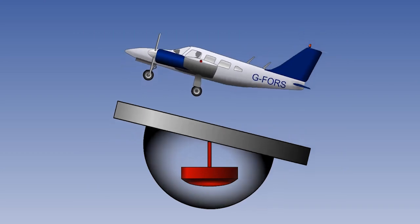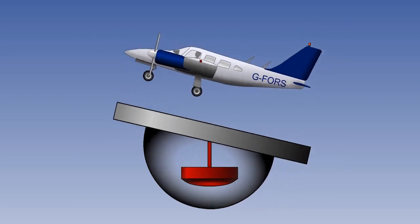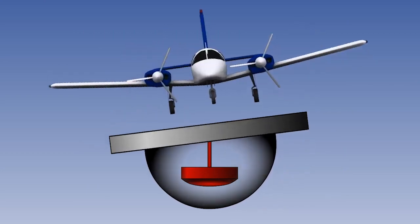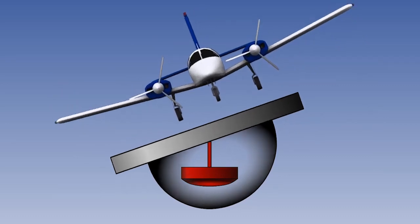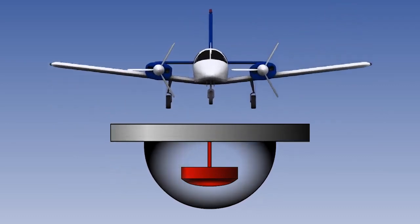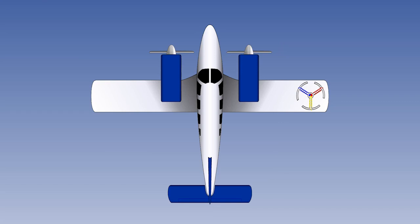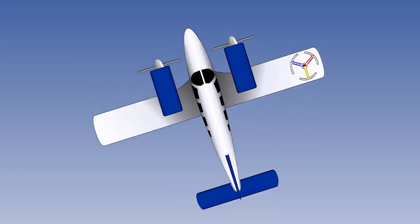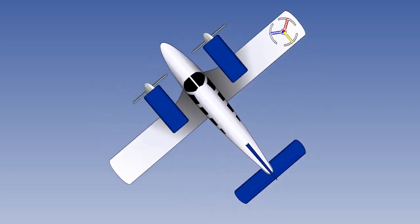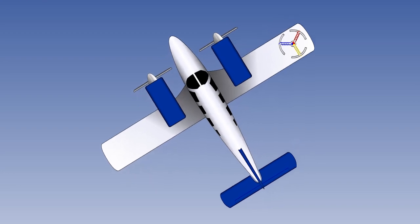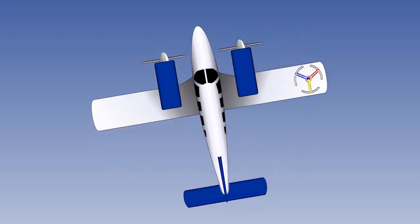This is to allow the flux valve to hang level, even if the aircraft pitches and banks up to 25 degrees. However, the hooks joint allows no rotation in azimuth. This is because the flux valve must follow the direction of the aircraft's heading.